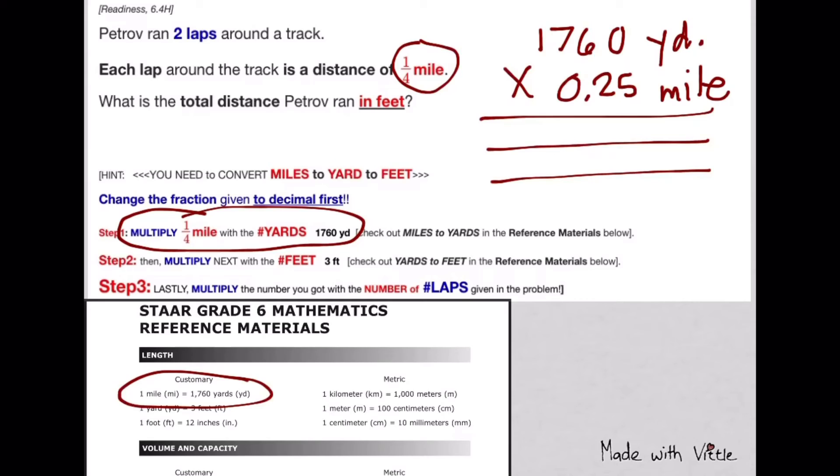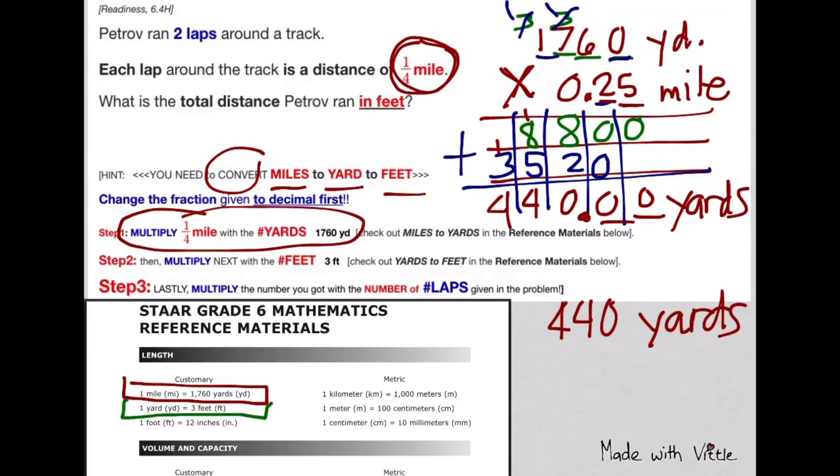In this case, we have to convert from miles to yards to feet. First things first, we know from your reference material chart that one mile is 1,760 yards. But here, we don't have one mile, it's just 1/4 mile. So change that to decimal, multiply it by 1,760 yards, and we'll find out how many yards equal just 1/4 mile. Now we know that there are 440 yards equal to that 1/4 mile.